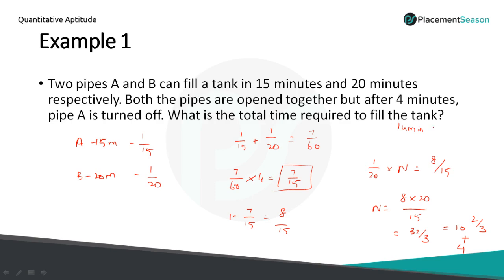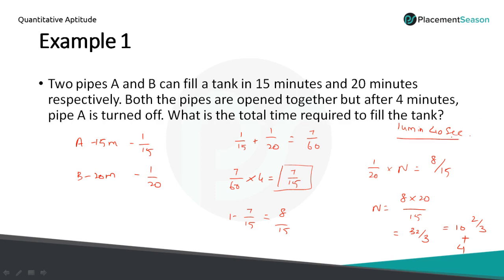2 by 3 minutes can be written as 40 seconds. So based on the answer format, if the answer is in 2 by 3 you can write it as 2 by 3, or convert to seconds — that is 40 seconds. The answer is 14 minutes 40 seconds.